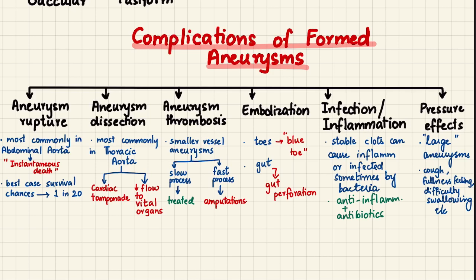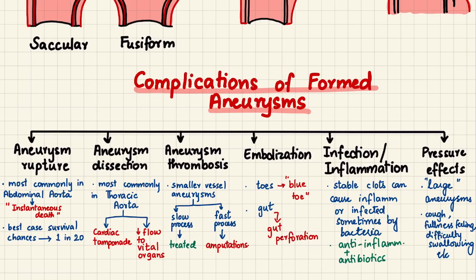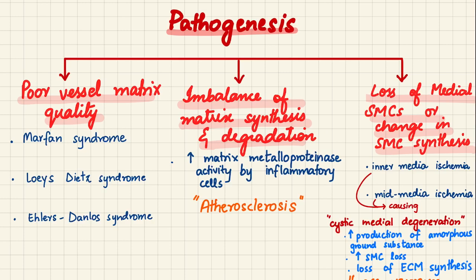Another complication is infection or inflammation of stable clots — since clotting and inflammation are closely linked, stable clots can become infected by bacteria, requiring antibiotics and anti-inflammatory medicines. The last complication is pressure effects, chiefly caused by true and large aneurysms. A large aortic aneurysm can produce cough, fullness, and difficulty swallowing due to compression of surrounding structures.